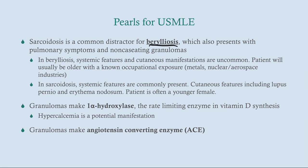With sarcoidosis, the patient will typically be a woman in her 20s to 30s with cutaneous manifestations. Importantly, granulomas produce 1-alpha-hydroxylase — normally a kidney enzyme in the vitamin D biosynthesis pathway. This leads to elevated levels of 1,25-dihydroxyvitamin D, the active form. Consequently, calcium absorption and retention increase, resulting in hypercalcemia — a distinctive lab finding in sarcoidosis.